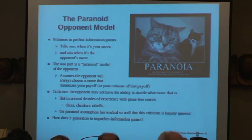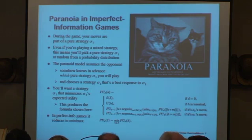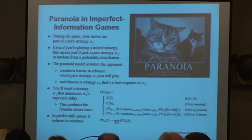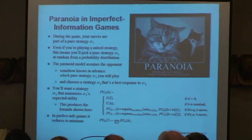So how does this generalize to imperfect information games? During an imperfect information game, your moves are part of some pure strategy I'll call sigma-1. Even if you're playing a mixed strategy, during the course of the game you are picking sigma-1 at random from some probability distribution. One can generalize the paranoid model and say we're assuming the opponent somehow knows in advance which pure strategy you're going to pick, and chooses their own strategy as the best response to that. And so you want to choose your strategy to make their best response as good as possible for you. That gives this formula, and in perfect information games it reduces to the minimax formula.